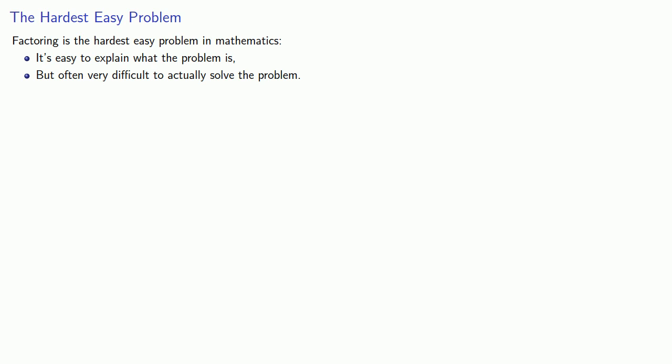What we mean by that is that it's easy to explain what the problem is, but it's often very hard to actually solve the problem. Now, from your previous experience factoring numbers, you might think that's not the case, factoring's easy. But the truth is, it only seems to be easy because we've only ever asked to solve easy problems. So, for example, factor 12, well, that's easy. On the other hand, factor 3,891, well, that's hard.